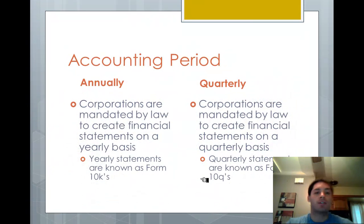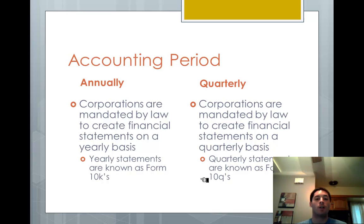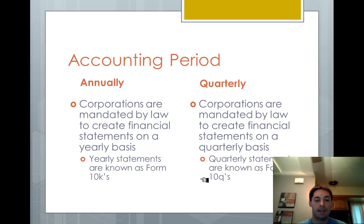Under law, businesses have to create financial reports at two different times during the year. Once per year is the big report — that report is mandated by law and is known as a Form 10-K. The other reports they have to do are quarterly, so every three months. Corporations are required to do this by law, and those quarterly reports are known as 10-Qs.